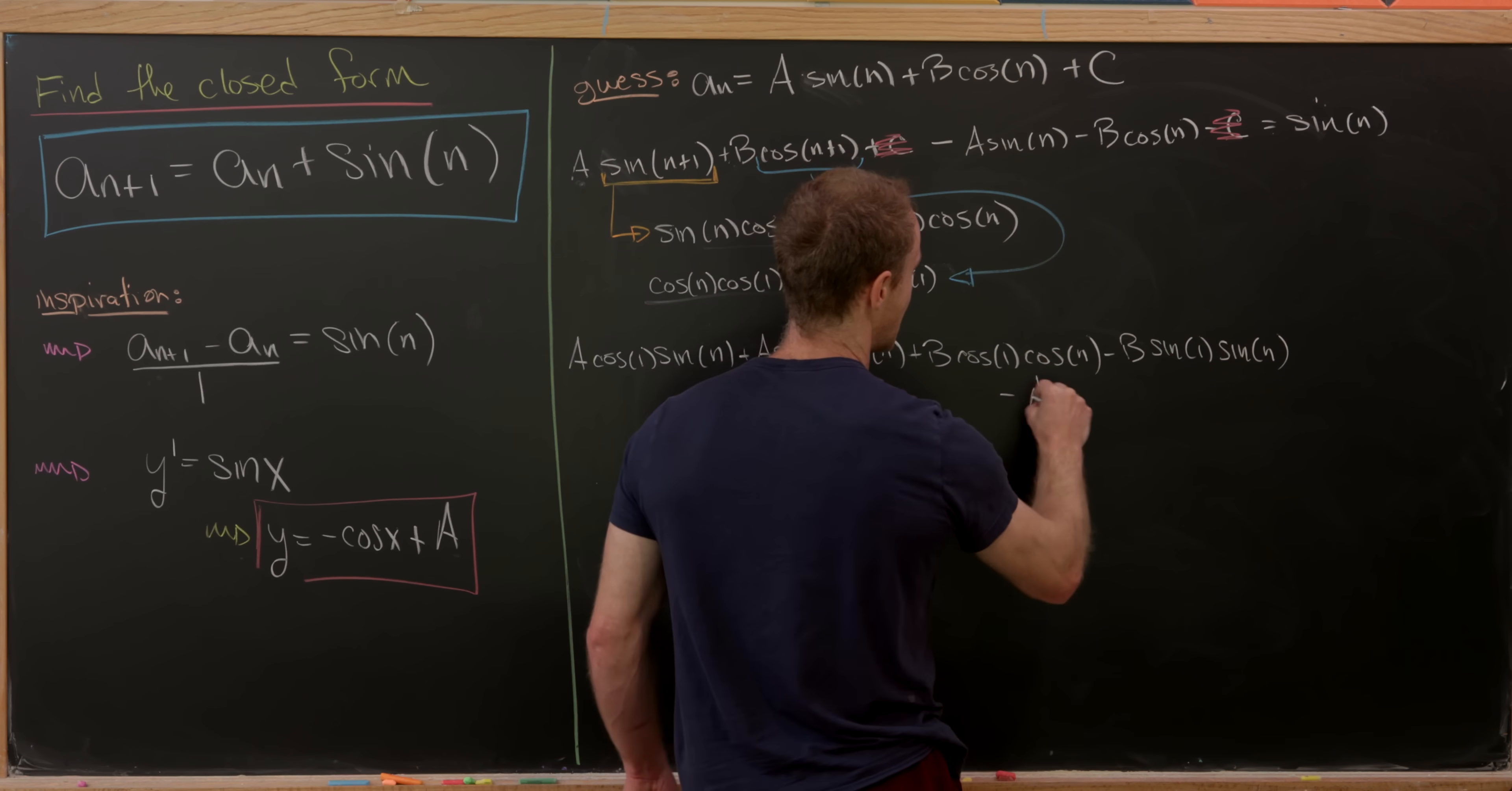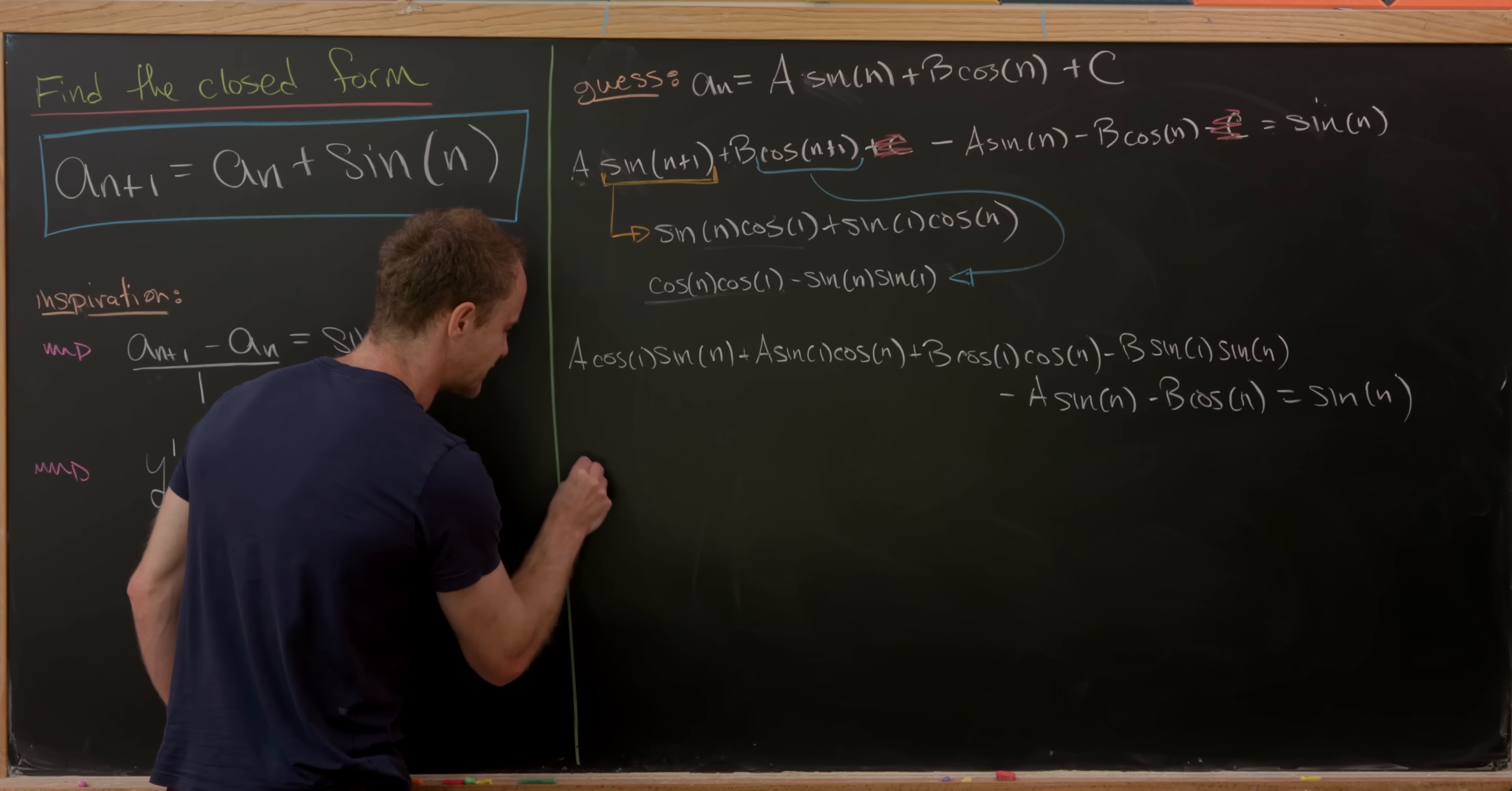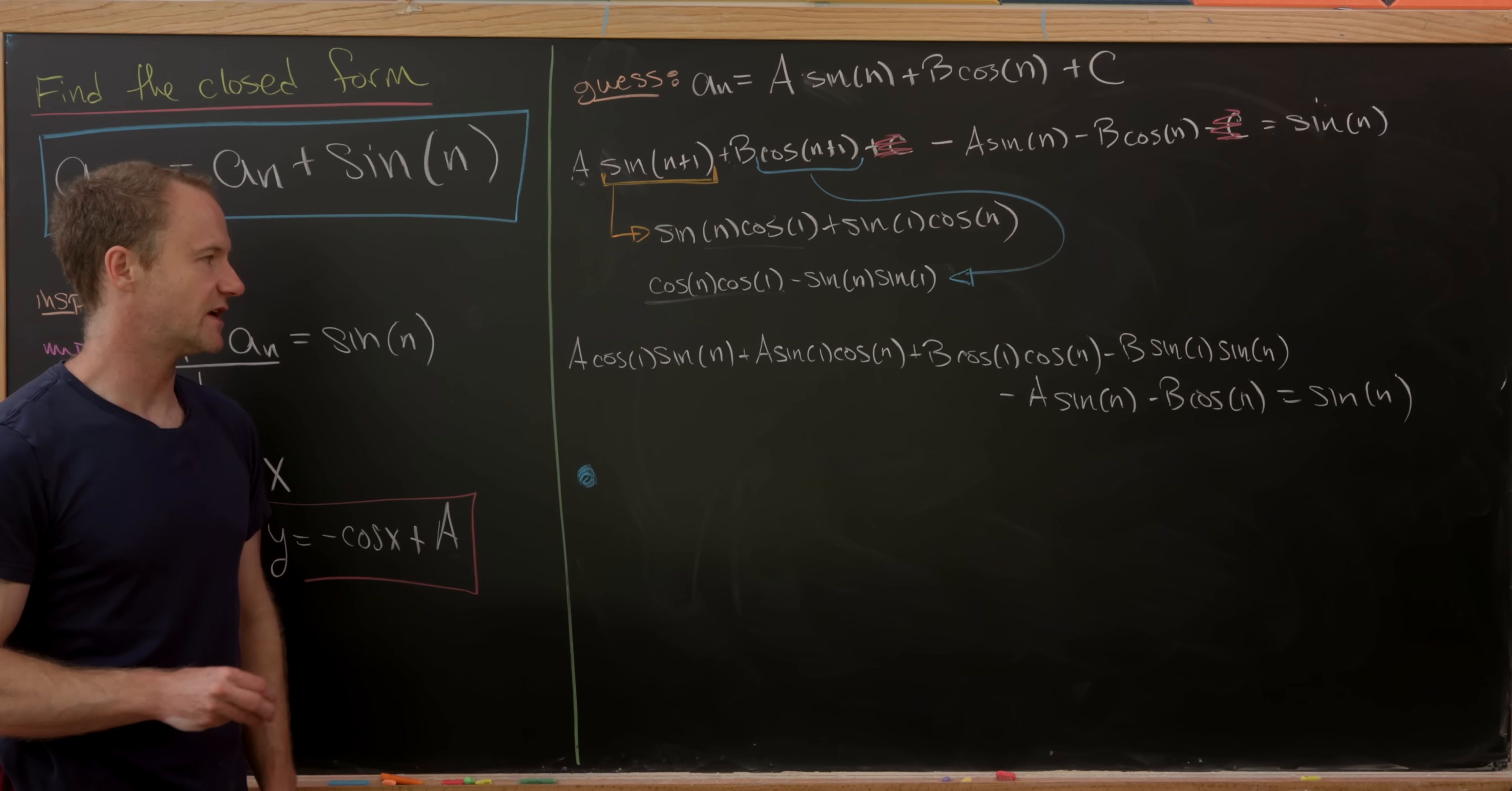And then finally minus a times sine of n minus b times cosine of n equals sine of n. So there's a lot going on there. But now we're going to use the fact that the sine function and the cosine function are linearly independent. But that's just a fancy way of saying that we can take this equation right here that has two unknowns a and b and pull it apart into two equations with two unknowns by extracting the coefficients of cosine of n and sine of n.